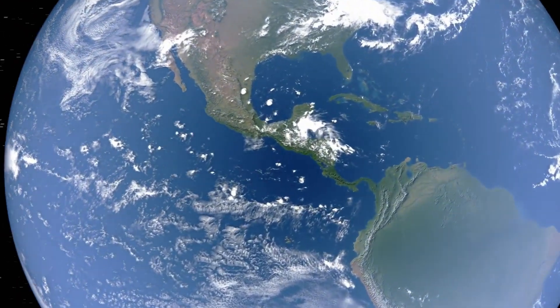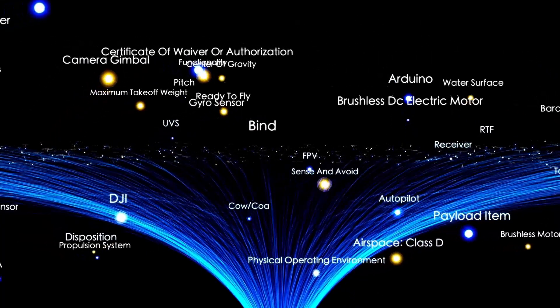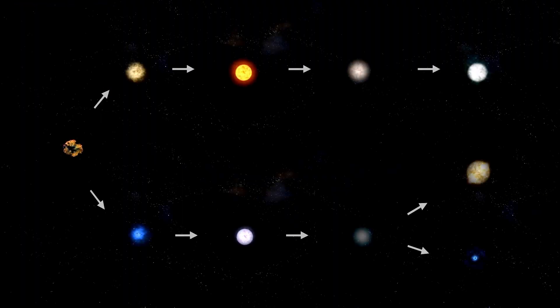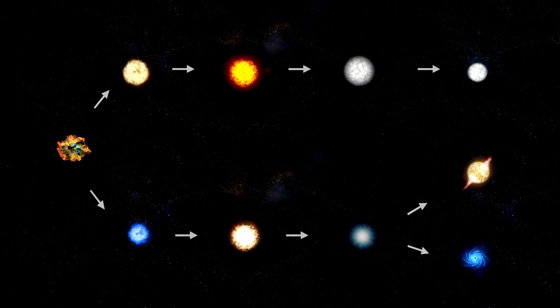The mechanisms we see in Betelgeuse—core transitions, convection, mass loss—mirror what our own star will one day experience, though on a smaller scale.